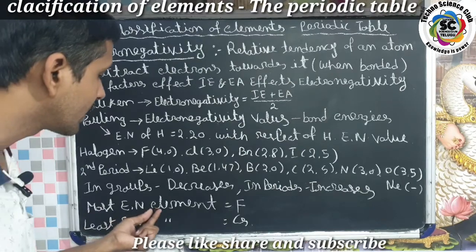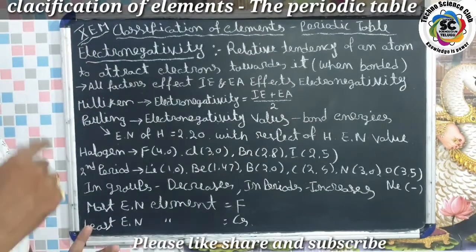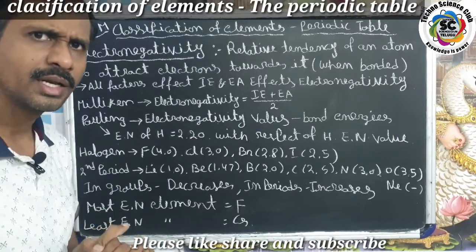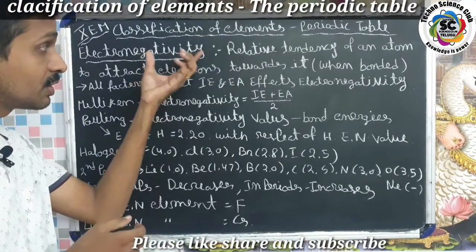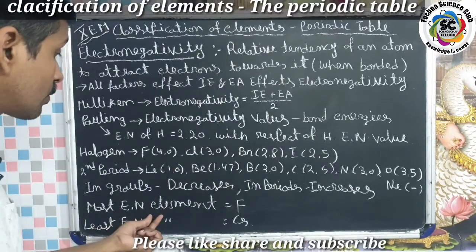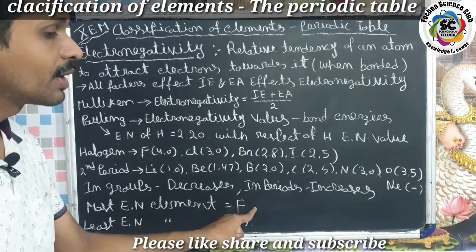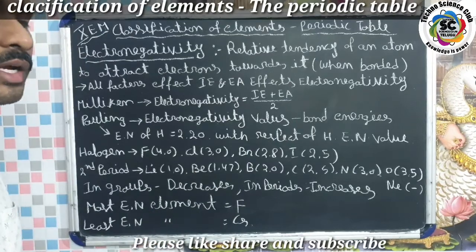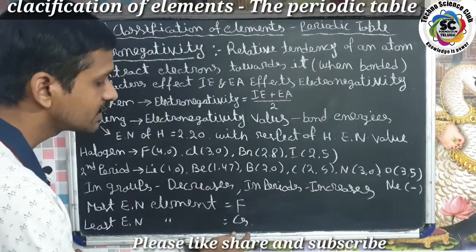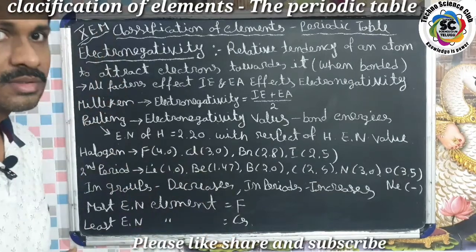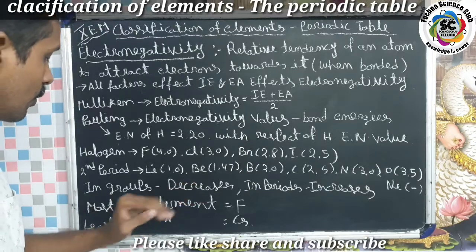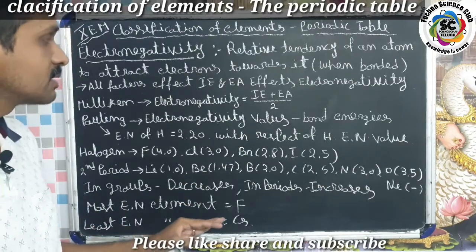The most electronegative element is a very important bit — especially for competitive exams and 10th class exams. The most electronegative element is fluorine, and the least electronegative element is cesium.